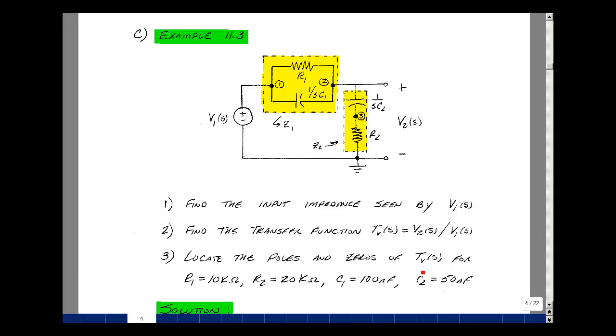And could you locate the poles and zeros of this voltage transfer function if R1 is 10k, R2 is 20k, C1 is 100 nanofarads, and C2 is 50 nanofarads?